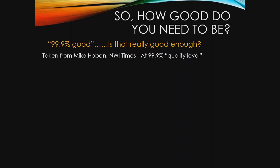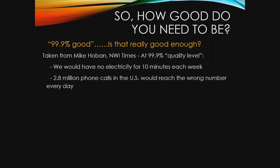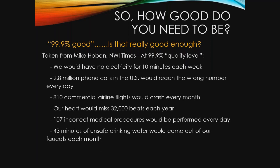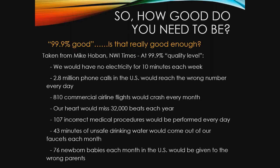So how good is good? It is often stated that 99.9% is pretty doggone good, allowing the 0.1% for natural human error. But in reality, how good is 99.9%? Here are some examples of what that 99.9% perfection leads to: no electricity for 10 minutes each week; 2.8 million phone calls in the U.S. would reach the wrong number every day; 810 commercial airline flights would crash every month; our heart would miss 32,000 beats each year; 107 incorrect medical procedures would be performed every day; 43 minutes of unsafe drinking water would come out of our faucets each month; and 76 newborn babies each month in the United States would be given to the wrong parents.